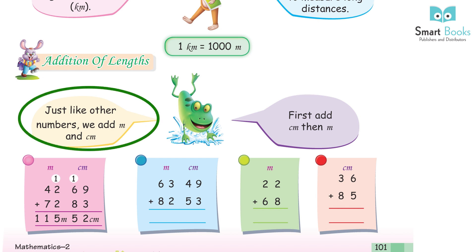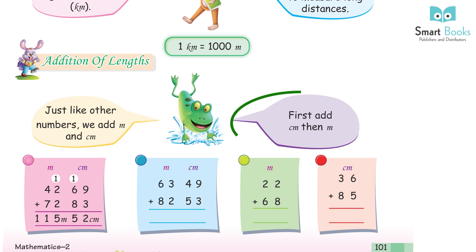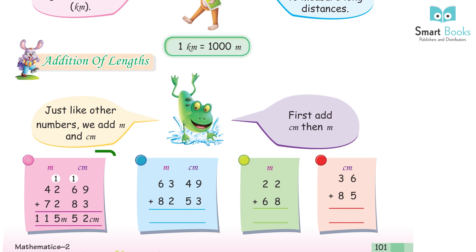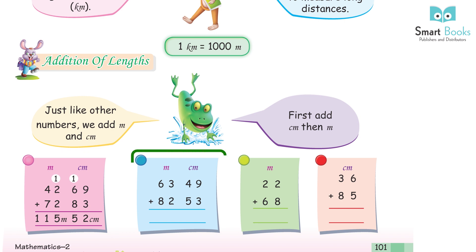Kilometer is used to measure long distances. 1 kilometer is equal to 1000 meters. Addition of length: Just like other numbers, we add meter and centimeter. First add centimeters, then meters. 42 m 69 cm + 72 m 83 cm = 115 m 52 cm.